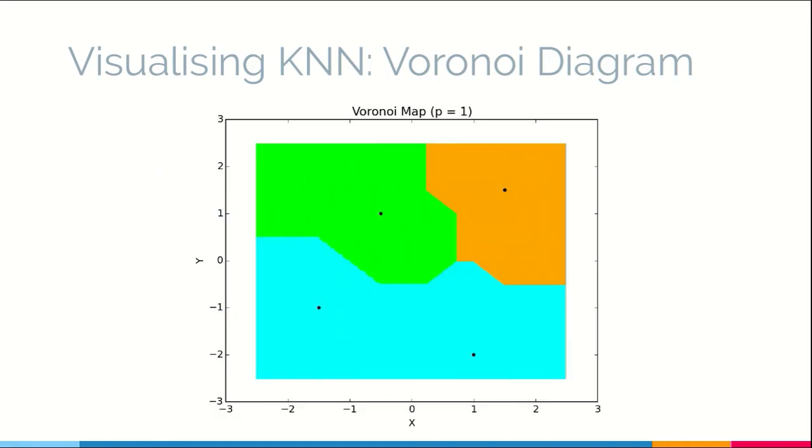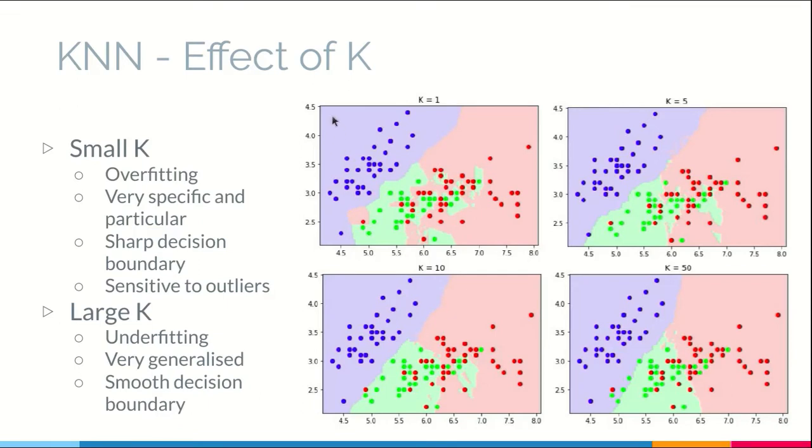So this is a KNN map where K is equal to one. You can see that the boundaries are quite sharp in this case. So let us look at the effect of K on the decision boundaries. So these are called the decision boundaries. For K is equal to one, the boundaries are quite sharp and very rugged or they're not at all smooth.